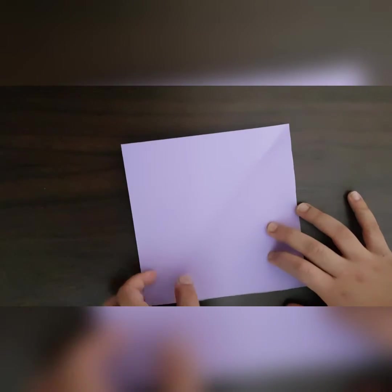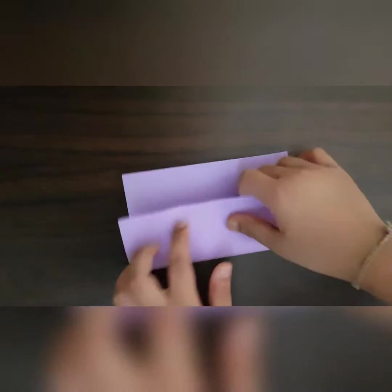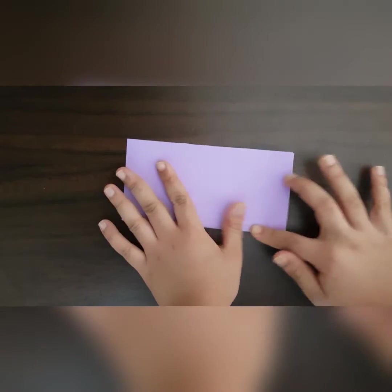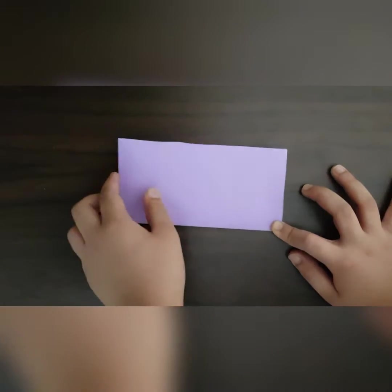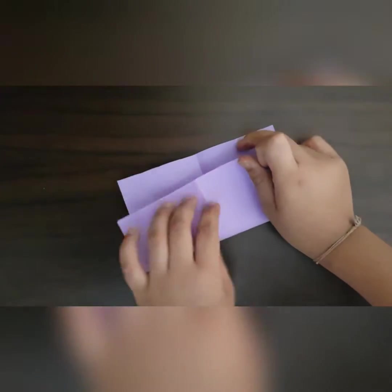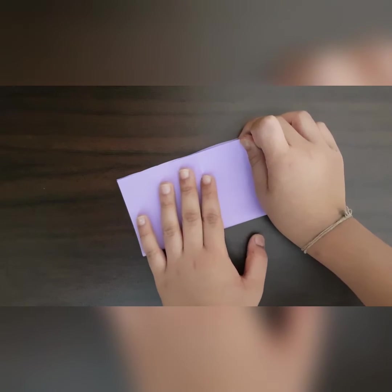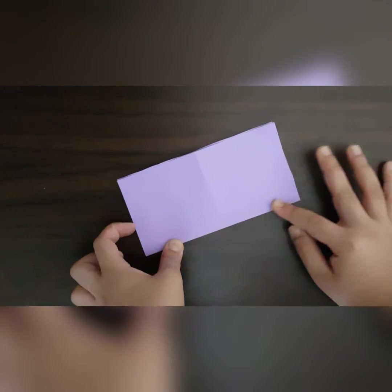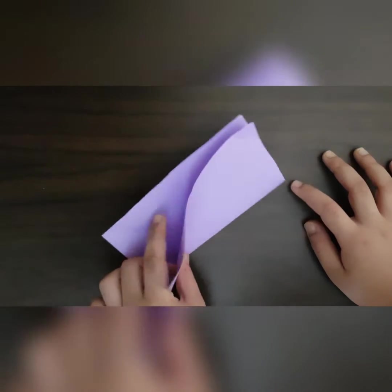Begin by folding in half in both directions. Try to make really sharp folds. Try to make really precise folds and crease sharply. Unfold and repeat in this direction. Unfold.